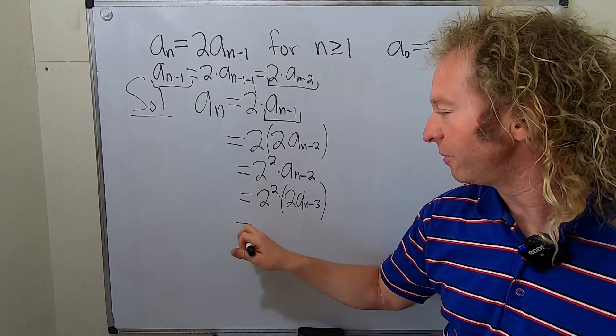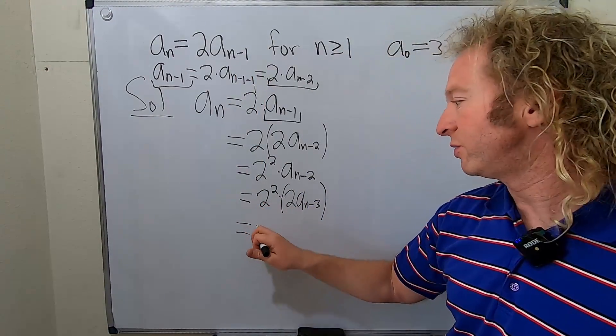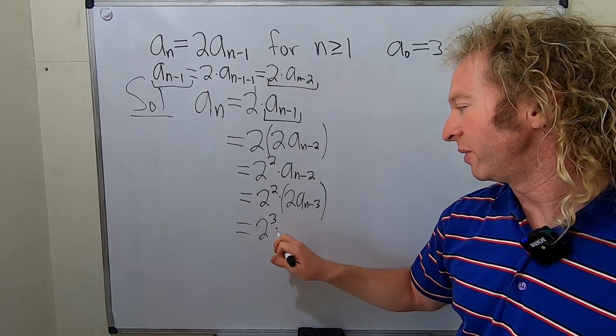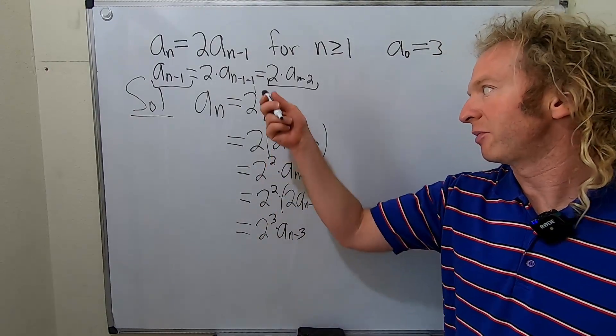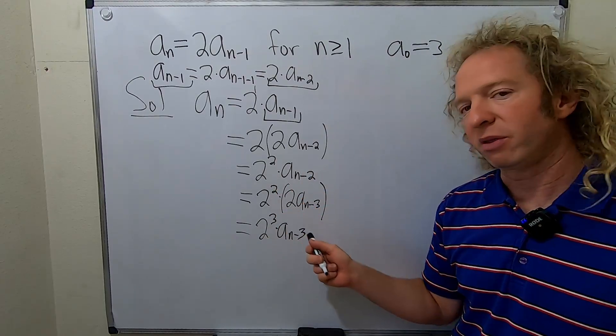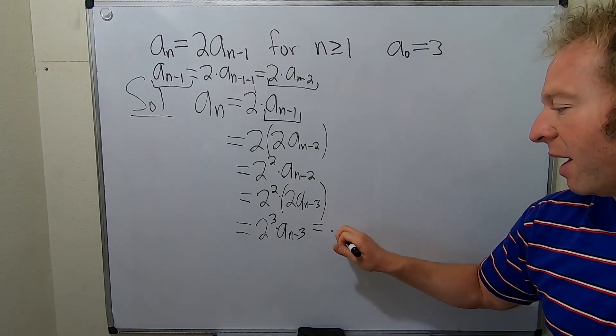Okay, now check it out: 2 cubed. 2 squared times 2 to the 1 is 2 to the 3. Then we have a_{n-3}. And so now you clearly see there is a pattern: 1, 1, 2, 2, 3, 3. So we can continue with this pattern.